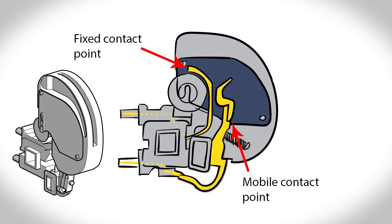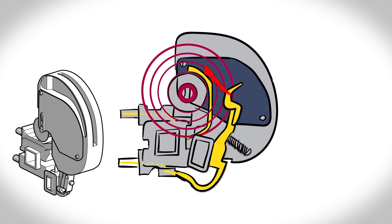The chamber is crossed by an intense magnetic field. This field is created by a coil which is constantly traversed by the current to be cut.